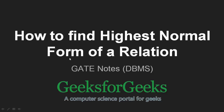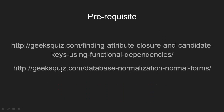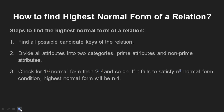In this video we are going to discuss how to find the highest normal form of a relation. This is an important topic from a GATE exam point of view. Before understanding this topic you should have an idea about how to find attribute closure, candidate keys, and the various normal forms of a relation. For understanding these topics you can refer to the provided links.